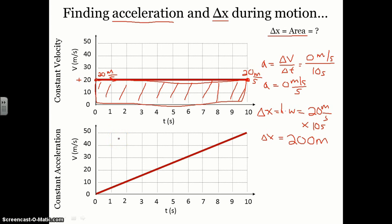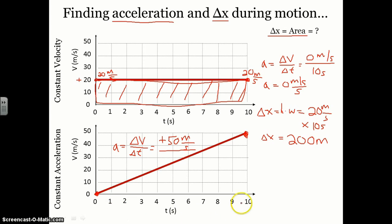We can use those same techniques to find acceleration and displacement for an object undergoing constant acceleration. Here, over time the velocity gets more positive, showing it's getting faster and faster while moving forward. The acceleration comes from the slope of the line, which is the change in velocity divided by the change in time. It goes from 0 up to 50 meters per second — a change of positive 50 meters per second — over a total of 10 seconds, giving an acceleration of positive 5 meters per second per second.